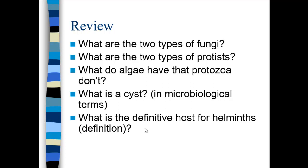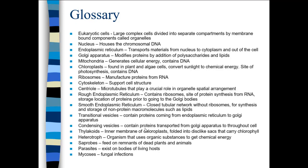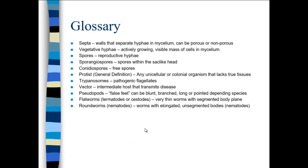The definitive or final host for helminths is where the helminth matures to adulthood and where mating occurs. After mating, the gravid helminths migrate to the perianal region and lay their eggs. That concludes Chapter 5 — we're done with eukaryotic cells for now, though we'll review it again. Make sure to look over the review slides and the two pages of glossary.